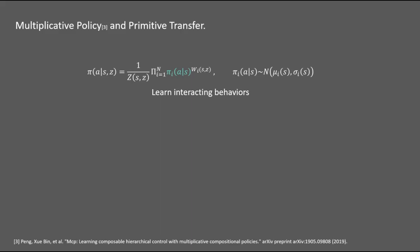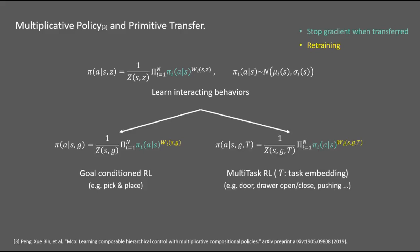Then, we extract the task-agnostic primitives and transfer it to the downstream task, such as goal-conditioned RL or multi-task RL, by retraining the gating networks while freezing the primitive weights.